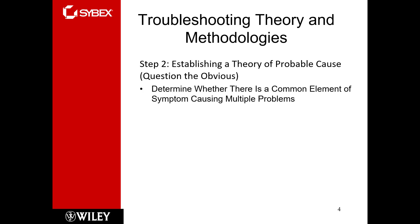Step two: establish a theory of probable cause. Question the obvious. If we have a general idea of what the issue is, look at how the situation might have caused that problem. Determine whether the issue is an element or a symptom, and whether it is causing multiple problems.